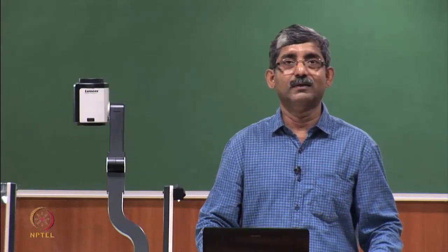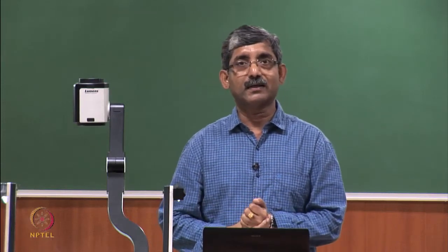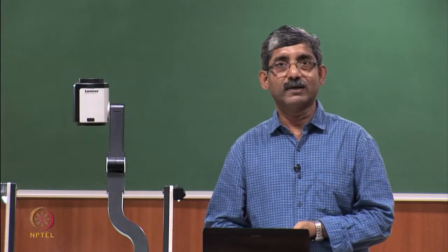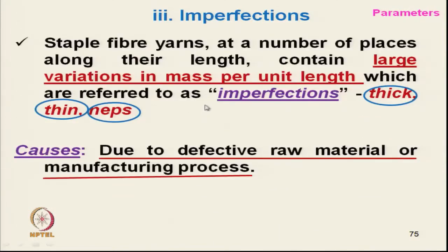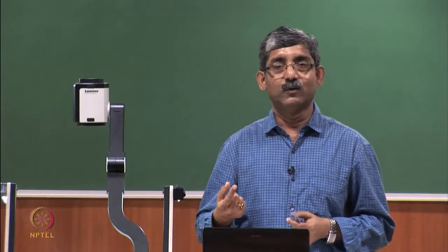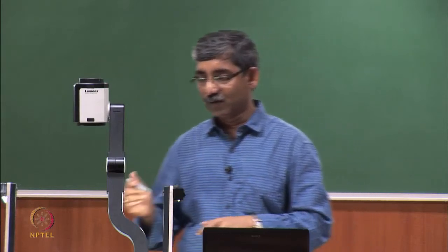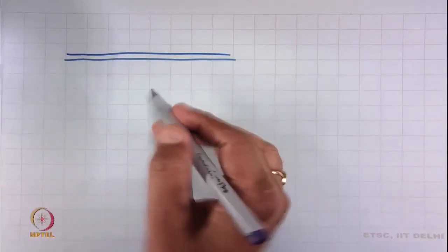We will continue with the yarn evenness. We will discuss another way of expressing yarn evenness: imperfections. Imperfections are basically the staple yarns where, at a number of places along the length, there are large variations in mass per unit length. Any staple yarn we produce will have inherent defects — this is actually an inherent part of the yarn, due to problems in the technology.